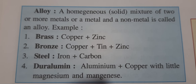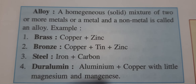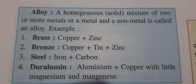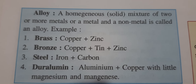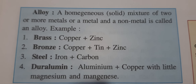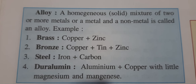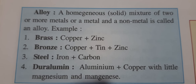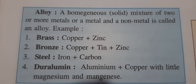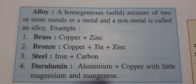The third example is steel. Steel is again a mixture of iron and carbon, but we cannot see them separately. That is why steel is a homogeneous mixture.